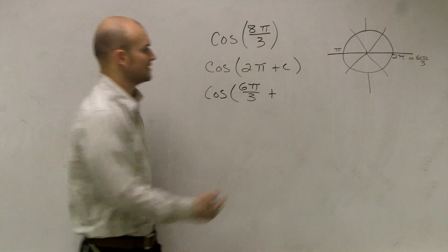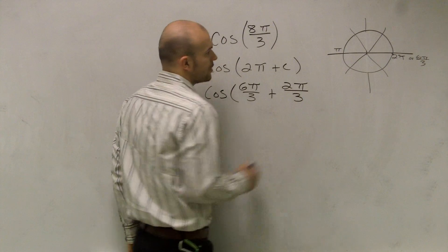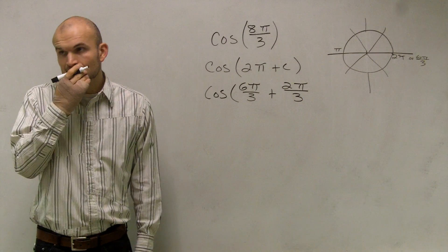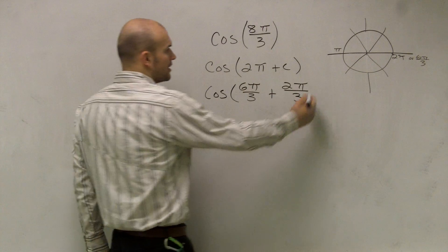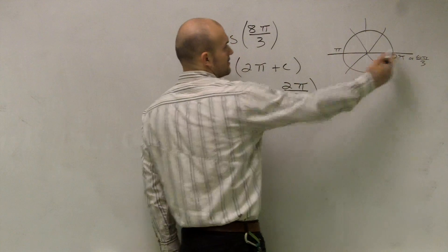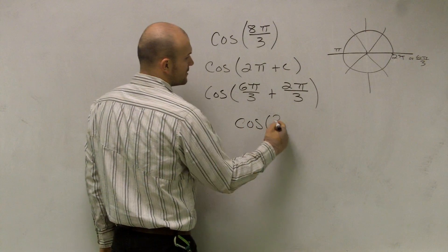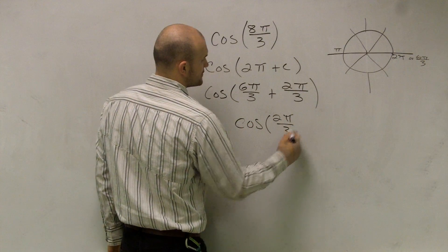What we can write is 2π over 3. Well, we know, guys, like I said, this is just a revolution. So really, what we're evaluating for is cosine of 2π over 3.